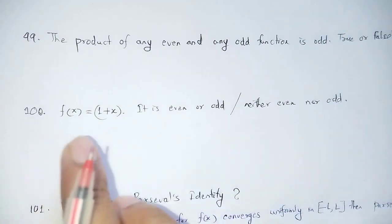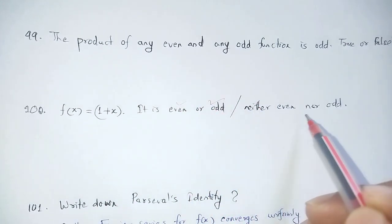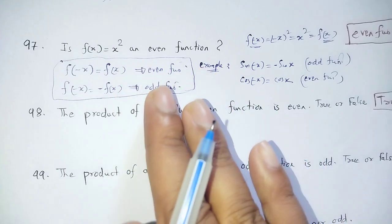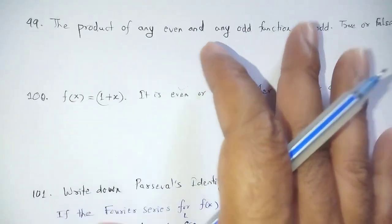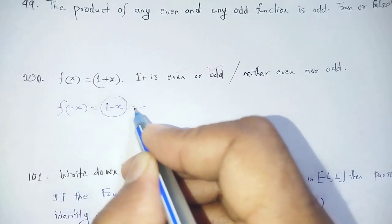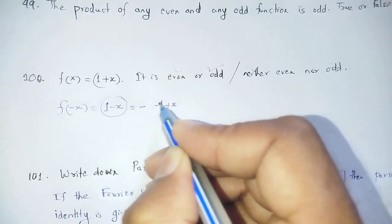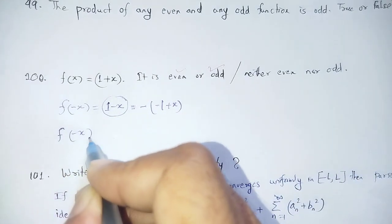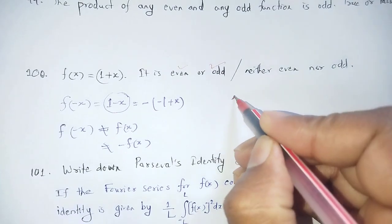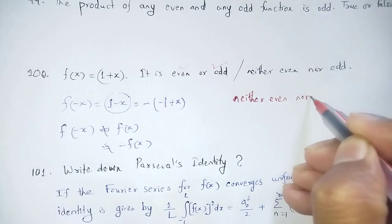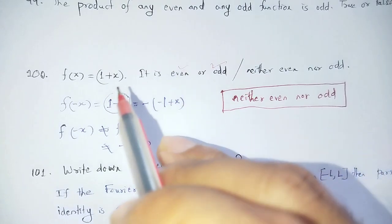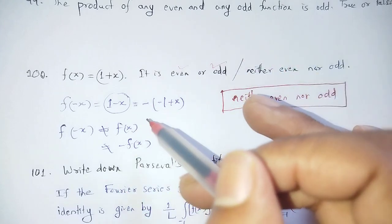Question number 100: f(x) = 1 + x — is it even, odd, or neither even nor odd? Applying the definition: f(−x) = 1 − x. This is neither equal to f(x) nor equal to −f(x), so f(x) = 1 + x is neither even nor odd.